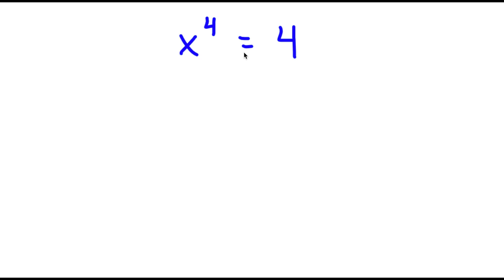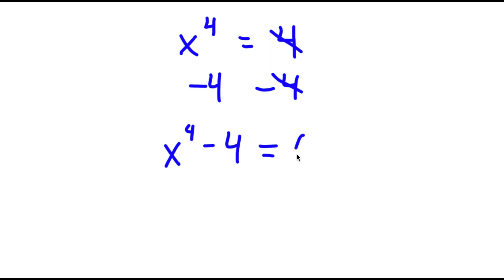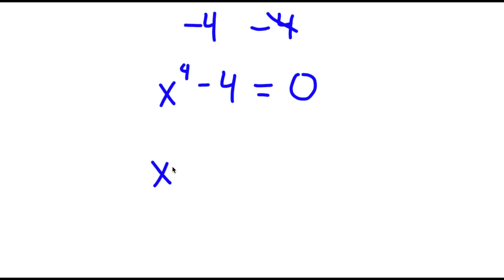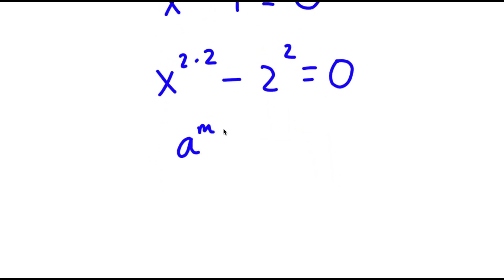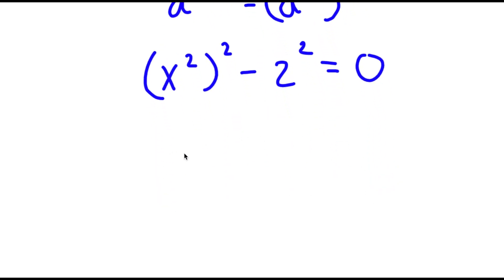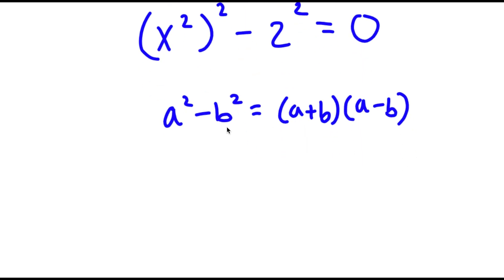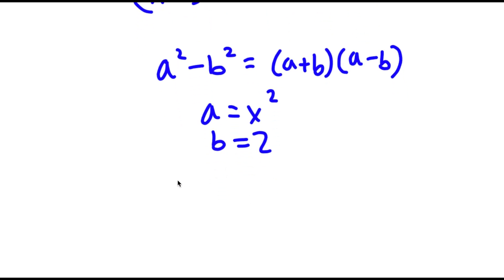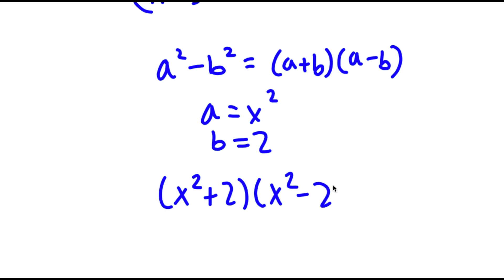All right, so in this problem I have x to the power of 4 is equal to 4. I'm going to first start by subtracting 4 on both sides, so now I have x to the power of 4 minus 4 is equal to 0. Now x to the power of 4 I can rewrite as x to the power of 2 times 2, and 4 I can rewrite as 2 squared. Using the rule that a to the power of m times n equals a to the power of m to the power of n, x to the power of 2 times 2 equals x squared to the power of 2. So now I have x squared to the power of 2 minus 2 squared equals 0. Using the difference of squares — a squared minus b squared equals a plus b times a minus b — where a is x squared and b is 2, I have x squared plus 2 times x squared minus 2 is equal to 0.